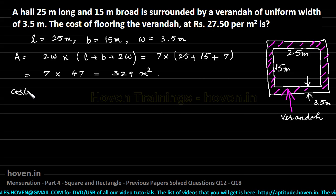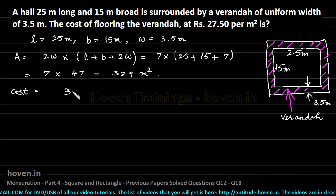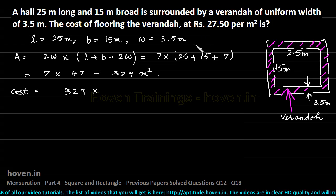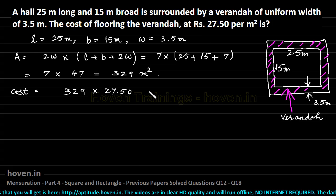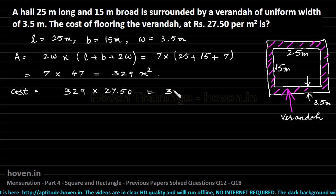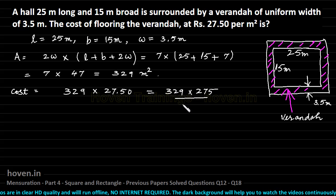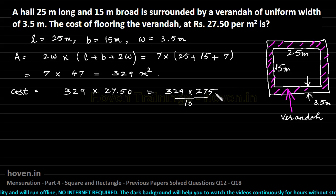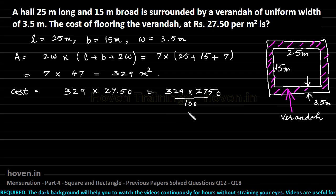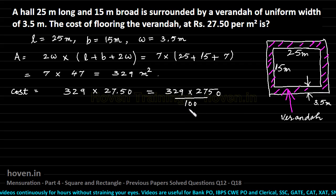So we can now write the cost would be equal to 329 multiplied by 27.5. This we can write as 329 multiplied by 275 by 10. This was 27.50, and I will write it completely. It is often better to deal with hundreds and all and multiply the numerators. Multiplication of non-decimals is often easier and things do help when we already have hundreds or multiples of 10 in the denominator.